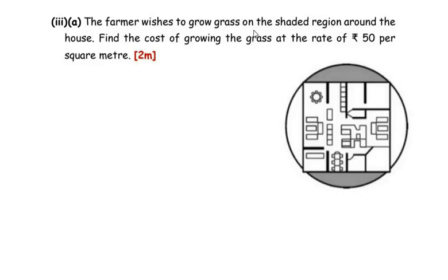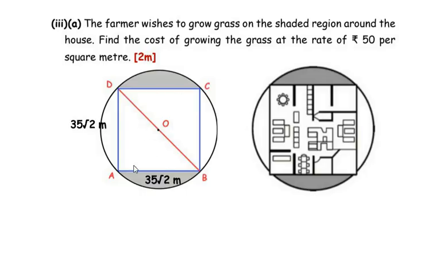The third sub-question: the farmer wishes to grow grass on the shaded region around the house. Find the cost of growing the grass at the rate of 50 rupees per square meter. The farmer decided to grow grass on two shaded regions. We need to find the total area of these two segments. In the figure, ABCD represents the house, and the two shaded segments — segment CD and segment AB — are the regions whose areas we need to find. The side of the square is 35√2 meters.